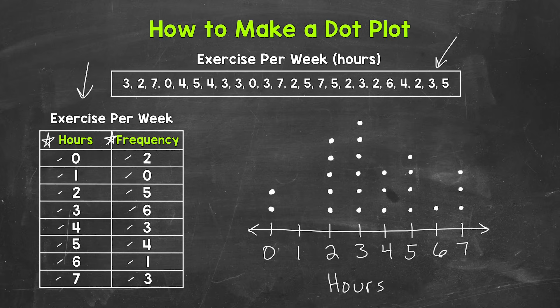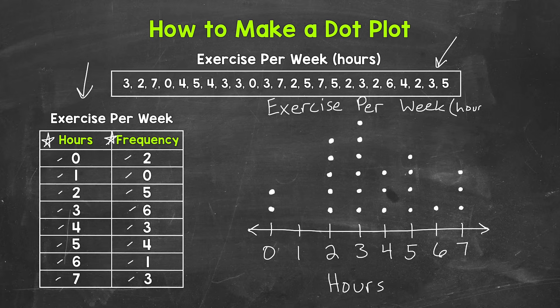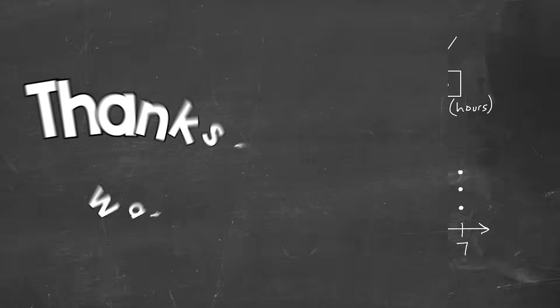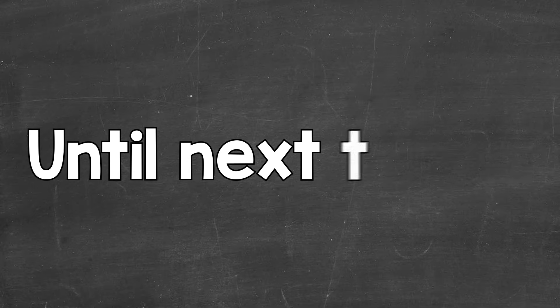And then lastly to wrap this up, we can put a title up top. So let's put exercise per week, and this is hours. So there you have it. There's how to make a dot plot. I hope that helped. Thanks so much for watching. Until next time, peace.